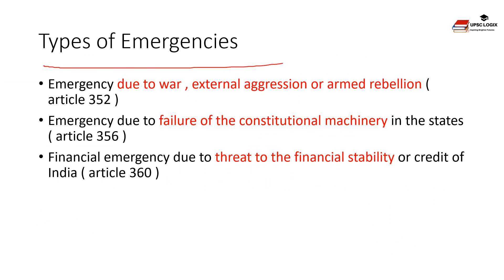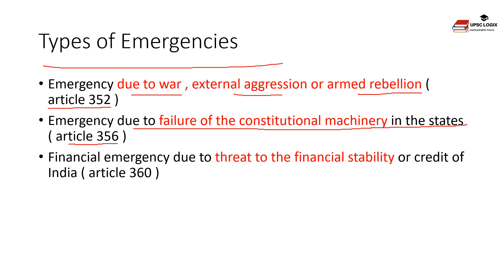The first type is national emergency under Article 352, due to war, external aggression, or armed rebellion. The constitution employs the expression 'proclamation of emergency' for this type. The second is under Article 356, due to failure of constitutional machinery in the states, also known as President's Rule, state emergency, or constitutional emergency. The third is financial emergency under Article 360, due to threat to the financial stability or credit of the country.